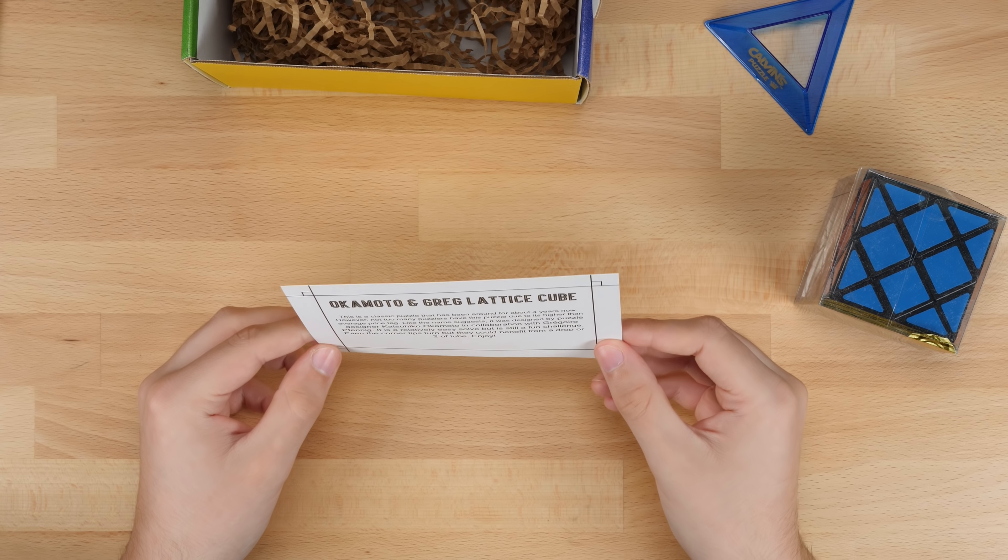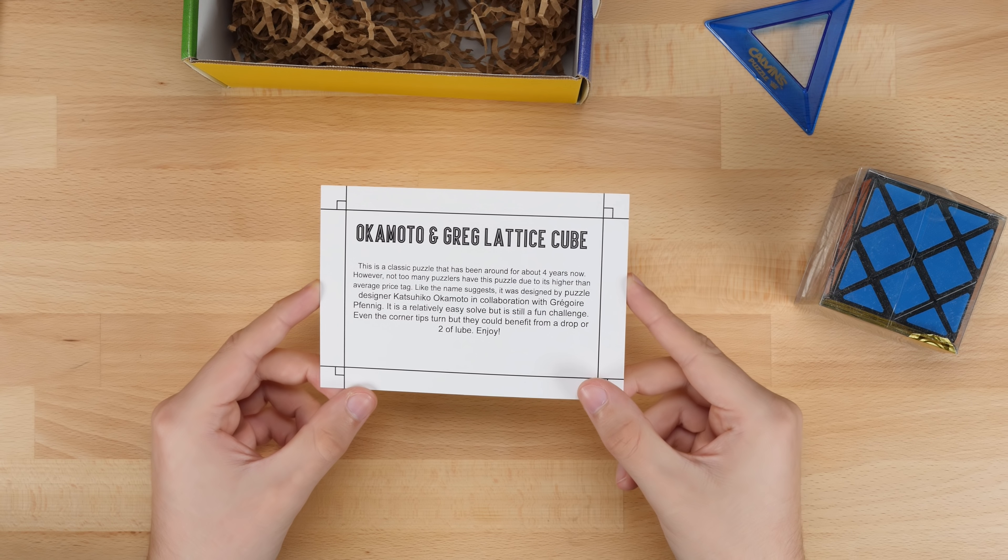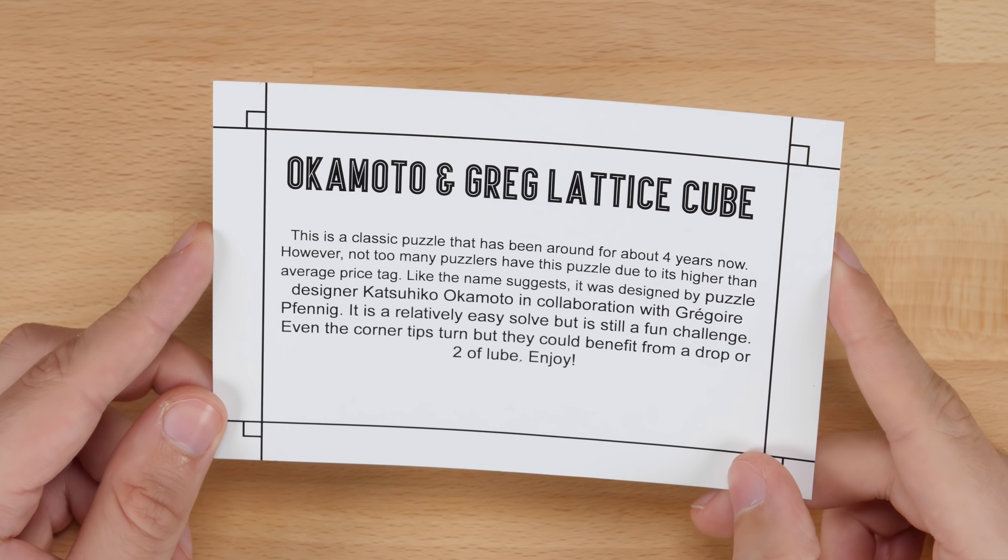Okay, so it looks like we got an Akimoto and Gregoire lattice cube. So let's go ahead and read about this puzzle. It is a Calvin's puzzle.